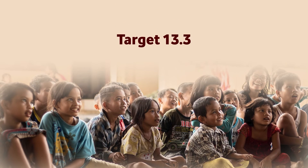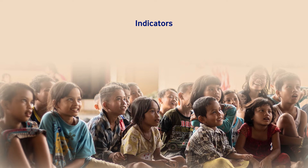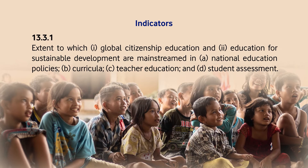Target 13.3 focuses on improving education, awareness raising, and human and institutional capacity on climate change mitigation, adaptation, impact reduction, and early warning. The indicator linked to this target is 13.3.1, which talks about the extent to which global citizenship education and education for sustainable development are mainstreamed in national education policies, curriculum, teacher education, and student assessment.